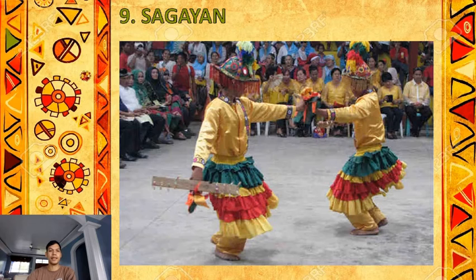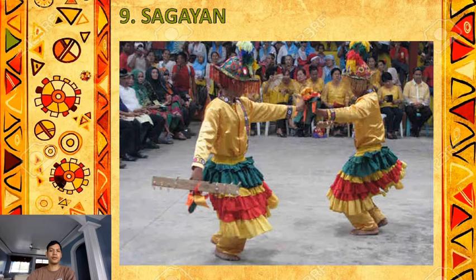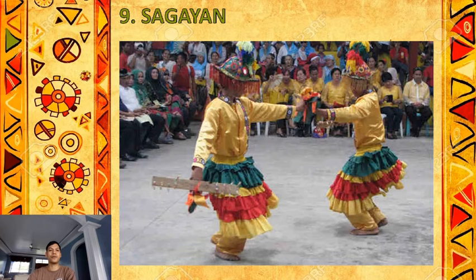Number nine is Sagayan, a Philippine war dance performed by both the Maguindanao and Maranao. It depicts in dramatic fashion the steps their hero Prince Bantugan took upon wearing his armaments, the war he fought in, and his subsequent victory after the wars. These are the examples of folk dances according to nature.